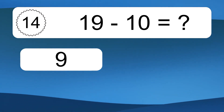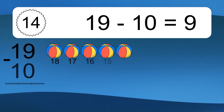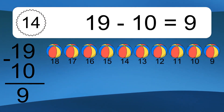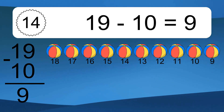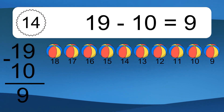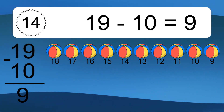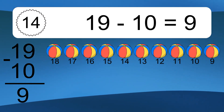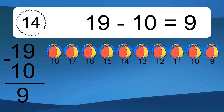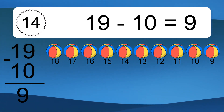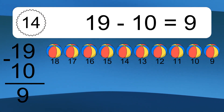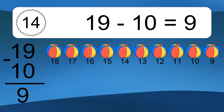Nineteen minus ten equals nine. Let's count it: eighteen, seventeen, sixteen, fifteen, fourteen, thirteen, twelve, eleven, ten, nine.